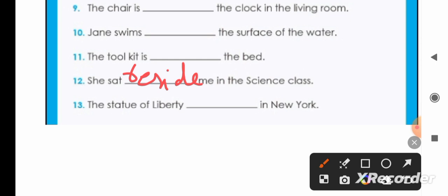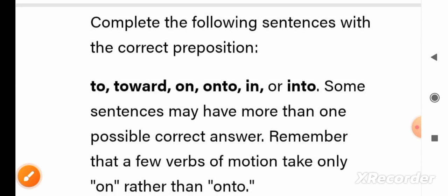The statue of liberty is in New York. Here is the error of verb, not of preposition, because here is already preposition in. So it will be the statue of liberty is in New York. Now see the next exercise.